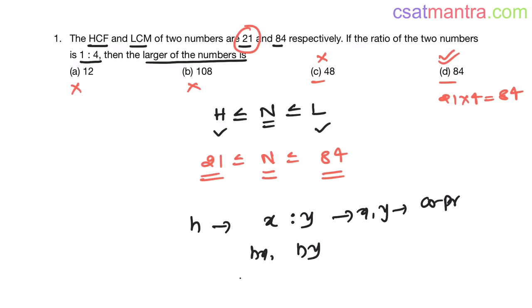Here HCF is 21 my friends. 21 and H is 1. Here HCF is 21, Y is 4. So the numbers are 21 and 84 my friends.